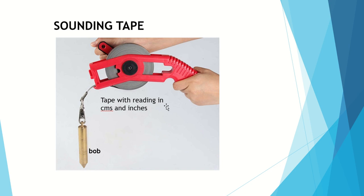As you can see in the figure, this is a sounding tape. A sounding tape consists of a tape with readings in centimeters and inches and a weighted bob at the end.